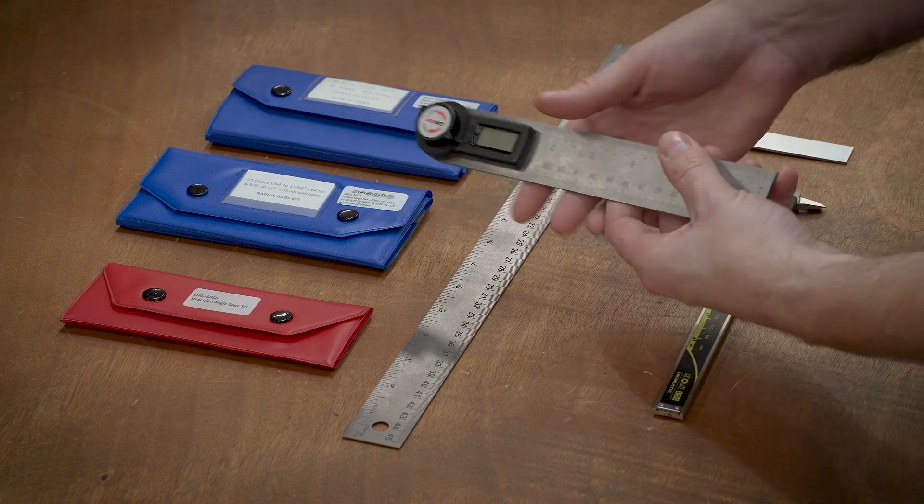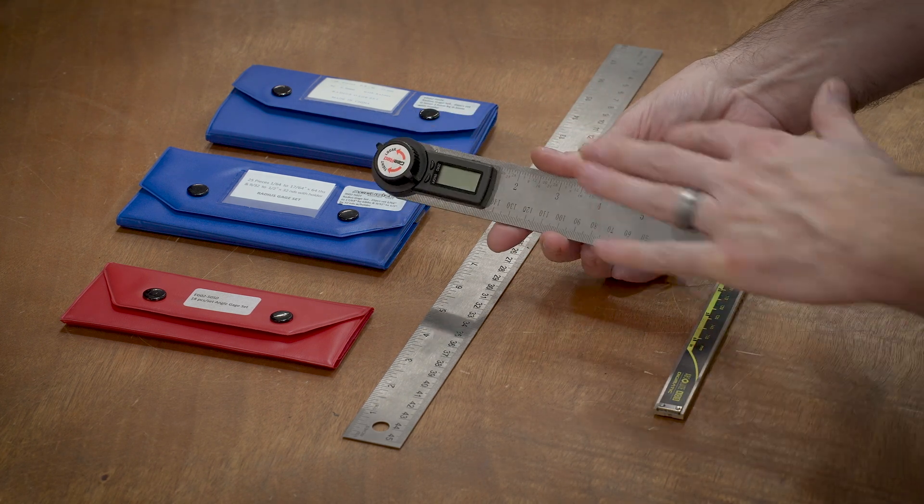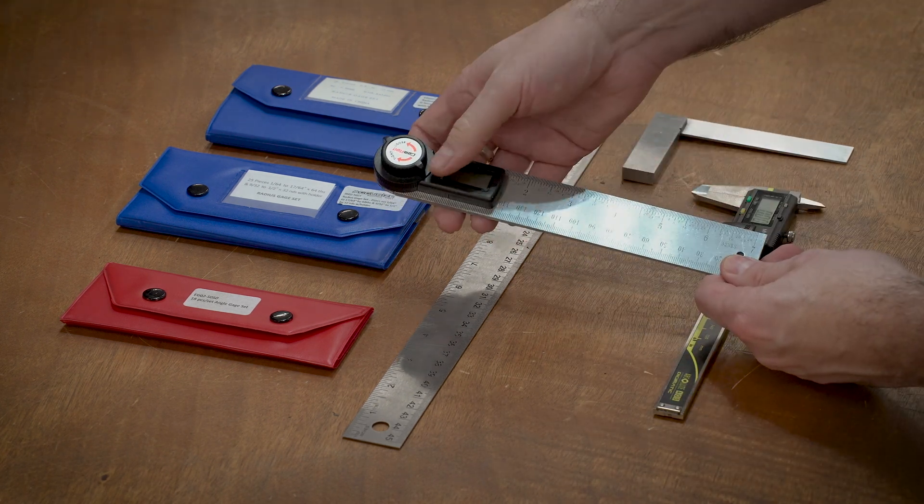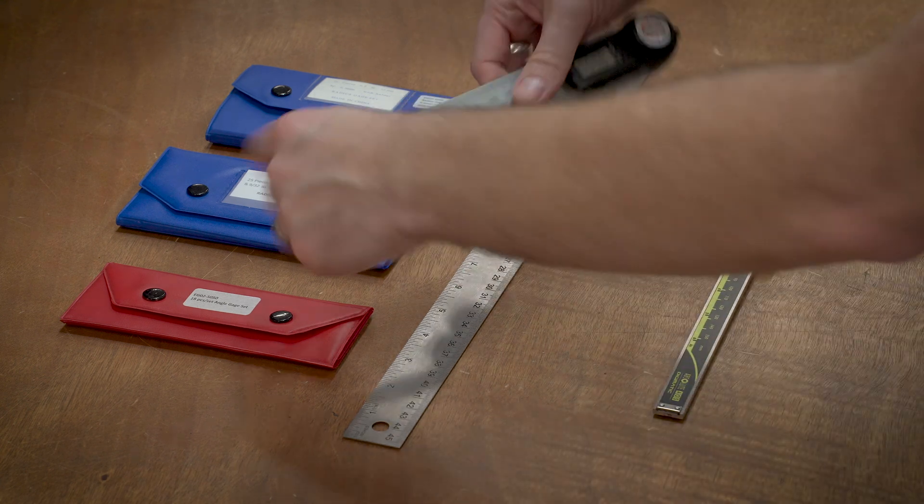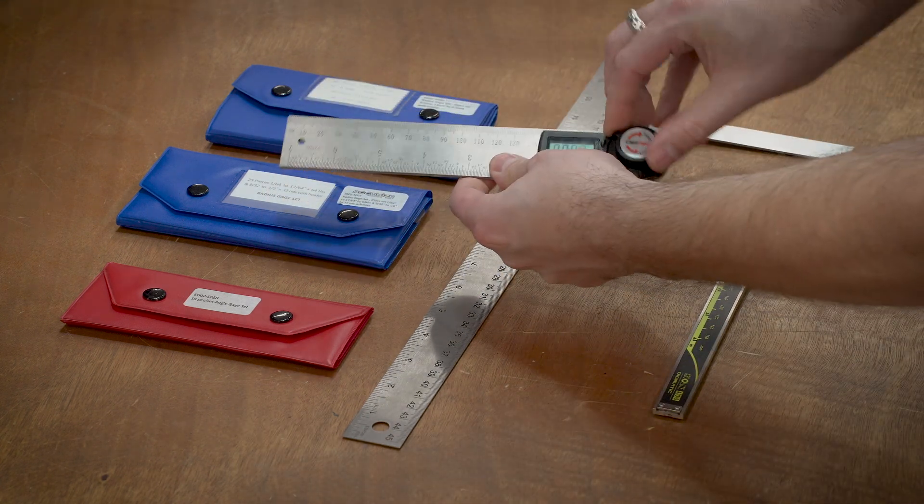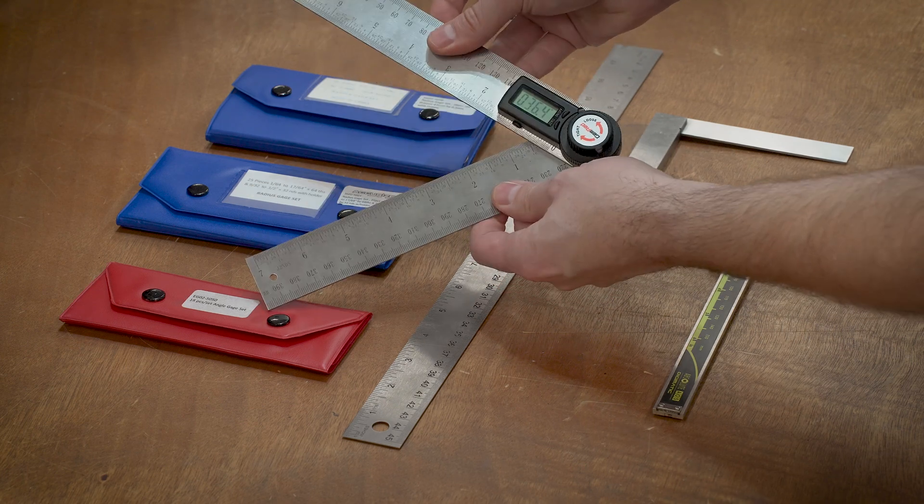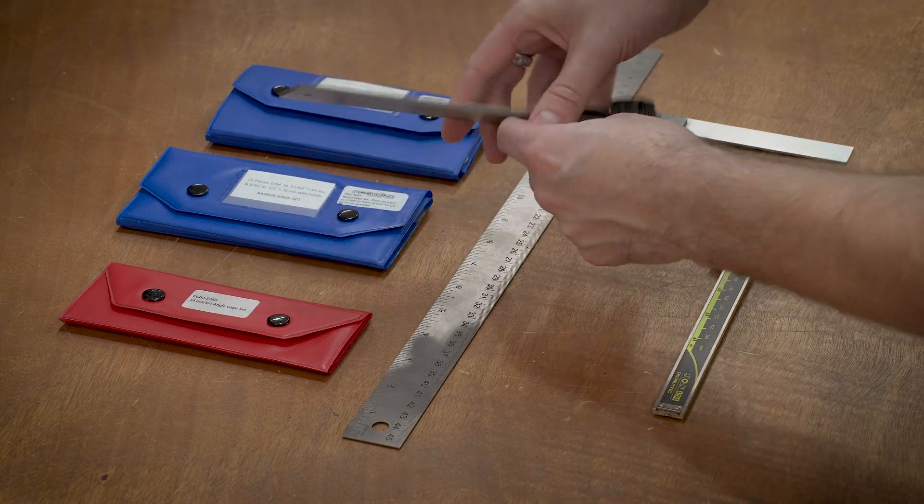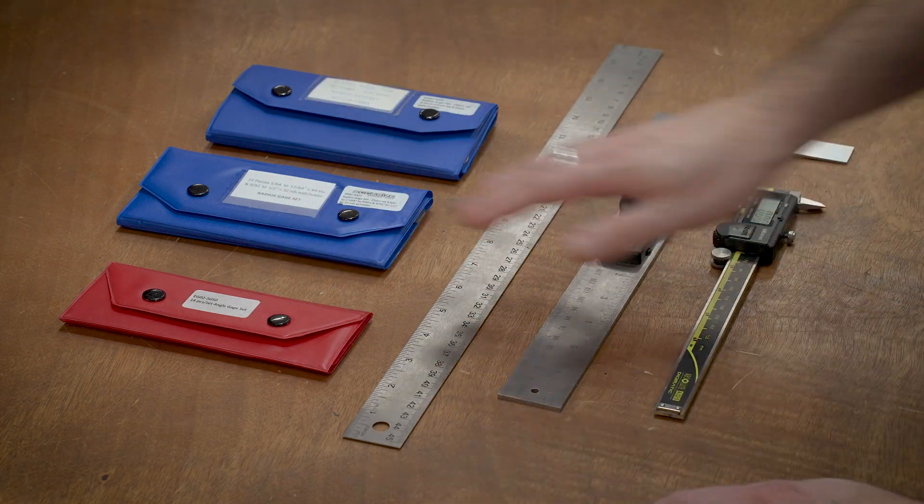And a digital protractor. This is kind of one of those cheap tools that ends up being really handy. Just has a digital display on it. And when you move it, I got to loosen it, it will show the degrees on it. So these come in really handy.